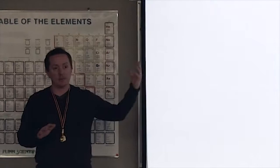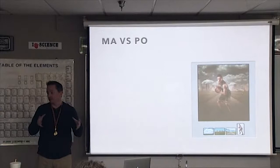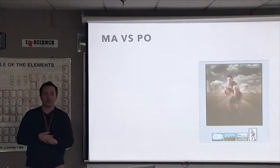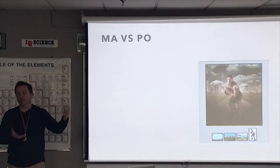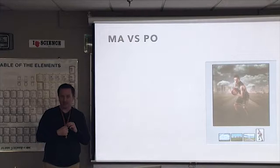MA versus PO. MA is the master artist category; PO is photographic open. Photographic open is what most people think of when they think of photographic competition — portraits, illustrative landscapes, all that stuff. Albums fall into the same category. All of that type of work counts toward your master's degree. The yellow ribbon is a master, blue is craftsman, and red is the artist.